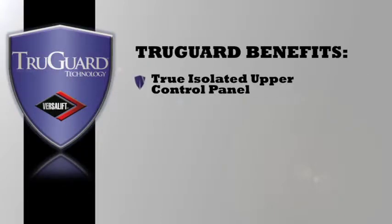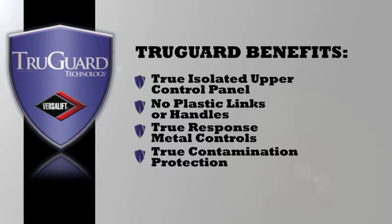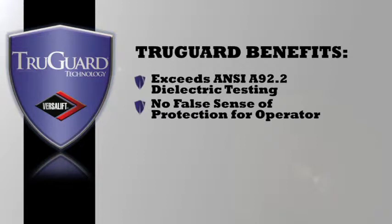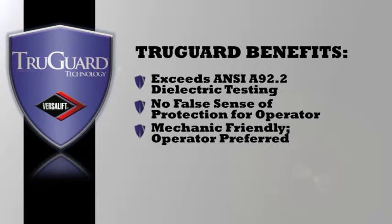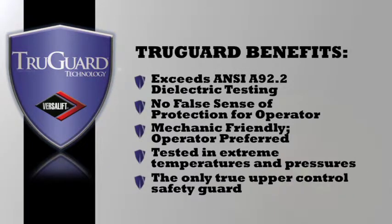With TruGuard you get a true isolated upper control panel. There's no plastic links or handles. You get true response metal controls. You get true contamination protection. It exceeds all ANSI A92.2 dielectric testing. There's no false sense of protection for the operator. It's mechanic friendly and operator preferred. It's tested in extreme temperatures and pressures and it's really the only true upper control safety guard.